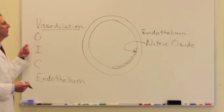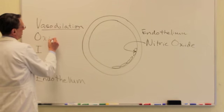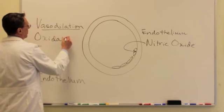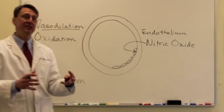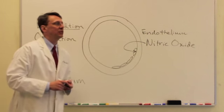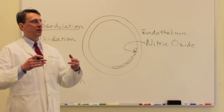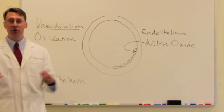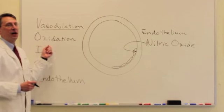The next function that nitric oxide has for us is it functions to reduce oxidation. It functions as an antioxidant. You're probably familiar with the term antioxidant. Things like vitamin C have become very popular. There is a greater number of plant extracts, especially in berries, that have shown to be very powerful as antioxidants.